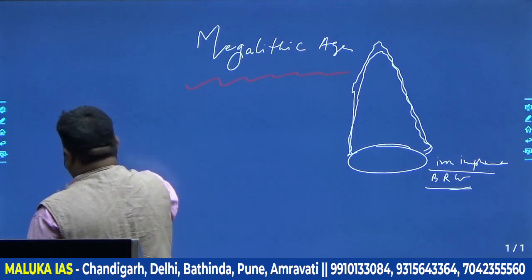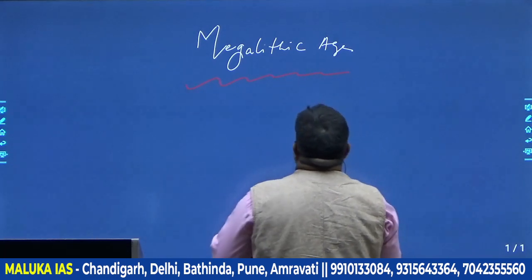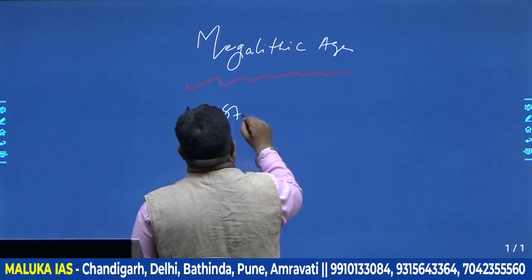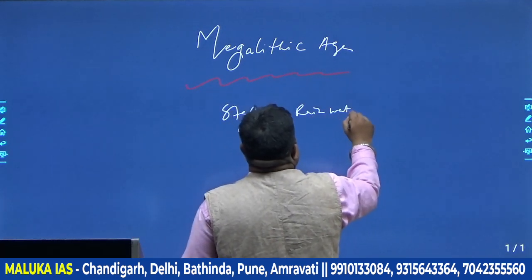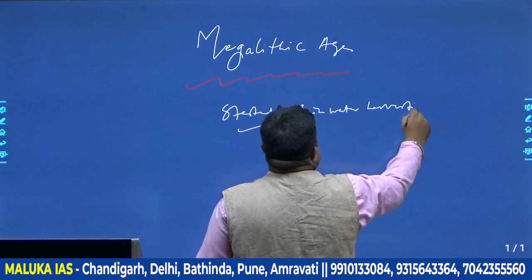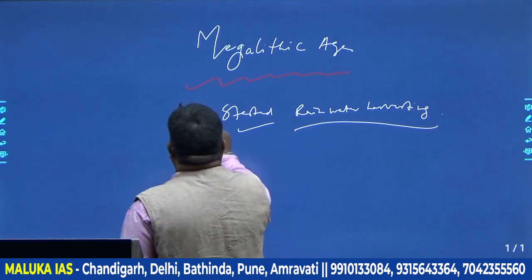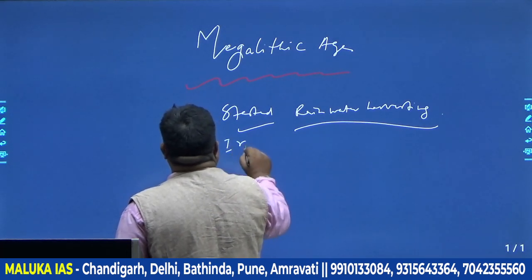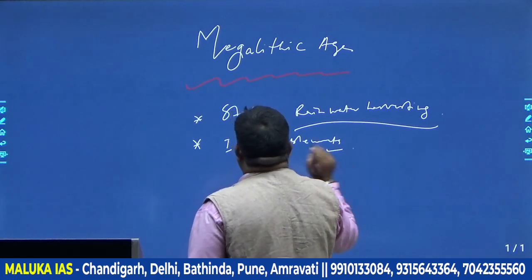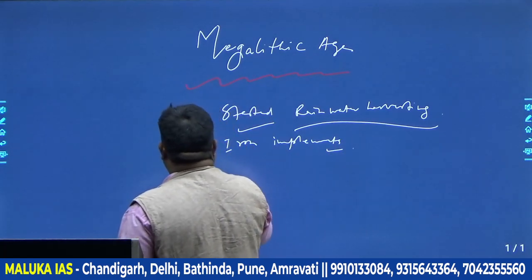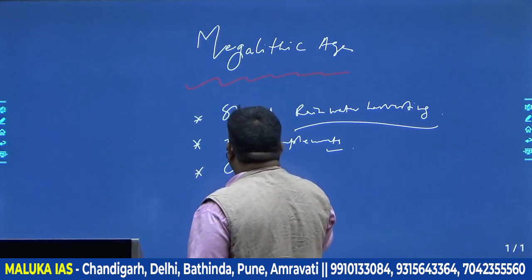In South India, the megalithic people were the first to start rainwater harvesting. They were the earliest to do so. They were also the first to bring iron implements to South India — prior to this, we don't find any iron implements. They were the first to start organized agriculture, especially the cultivation of rice.